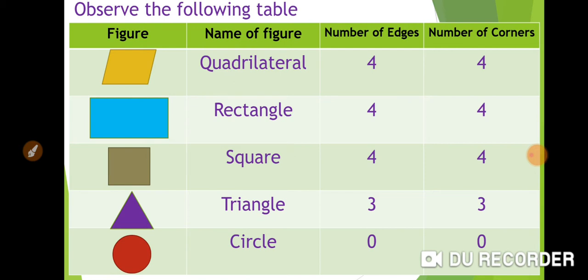Now it's called triangle. Triangle has three edges and three corners. Last one is circle. Circle has no edges, no corners.